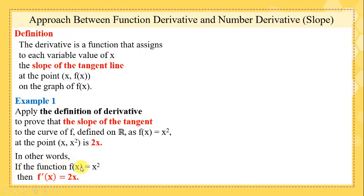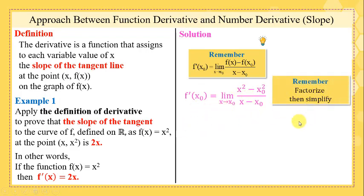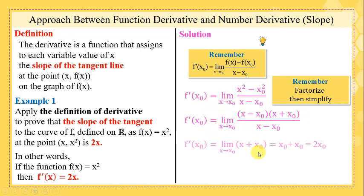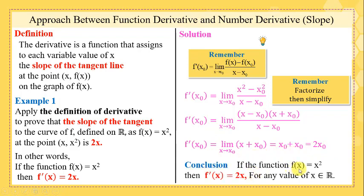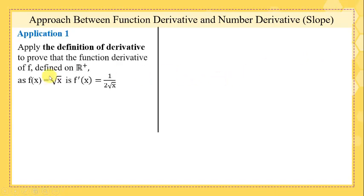In other words, we want to prove that if the function is x², then the derivative function is 2x. Remember the definition of derivative and simply apply this definition at x = x₀. Factorize and simplify, and we get the answer 2x₀. So we deduce that if f(x) = x², then f'(x) = 2x for any value of x.